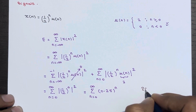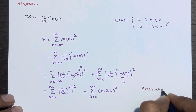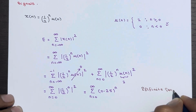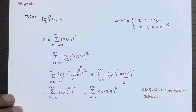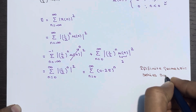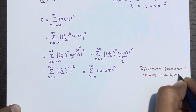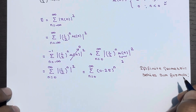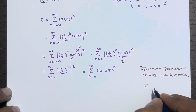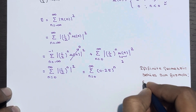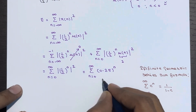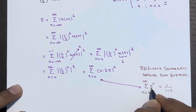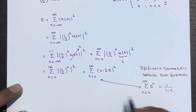Here you should know the infinite geometric series sum formula. The formula says: summation of c^n over the limit n ranging from 0 to ∞ equals 1/(1 − c). You can compare this with our expression — both are similar. In place of c we have 0.25, so we apply the same formula.